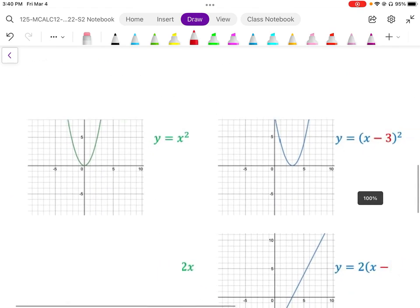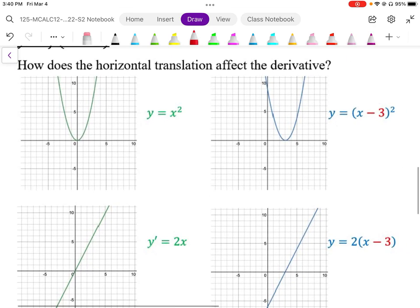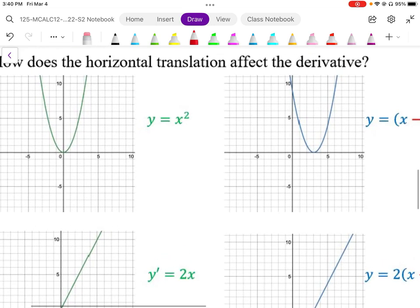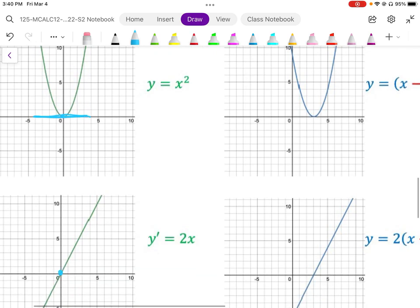What about a horizontal shift? Well, if we take a look at a horizontal shift, if I take a look at my graph of y equals x squared, and I can think of the easiest point to keep track of is my horizontal tangent there. It gives me this zero right here.